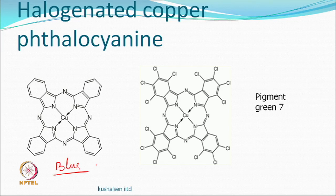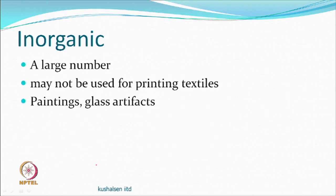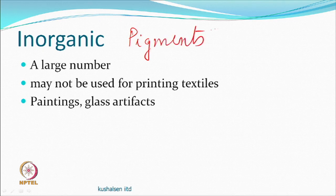There are also large numbers of inorganic pigments. Some can be used for textile printing, but generally they are used for paints, ceramics, and glass — where high temperature resistance allows fusing into molten glass. The coloured glass in old churches uses inorganic compounds extensively.